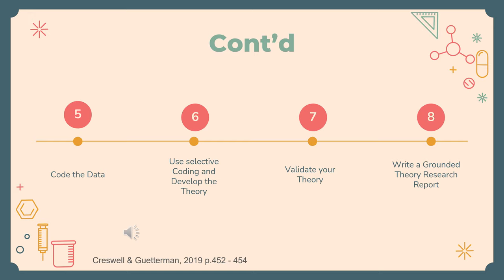Step 5: Code the data. Coding the data occurs during data collection so that you can successfully determine what data to collect next. Step 6: Use selective coding and develop the theory. This final process of coding involves actually developing your theory. This can include interrelating categories within the coding paradigm. You can present this theory as a series of propositions or sub-propositions. This stage can also involve writing a story or narrative that can best describe the interrelationship among categories.